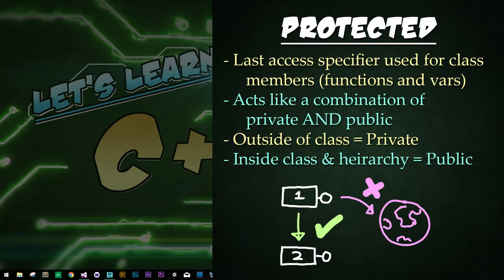Protected is the last of the access specifiers. In one of the previous tutorials, we learned about public and private, and now we will cover the last: protected. Protected class members act as private to anything outside of the class hierarchy. However, inside the class hierarchy, those same members act as public. In other words, protected is a keyword that acts as private outside the class and acts as public within the class hierarchy and the inheriting classes. That's it — it's just that simple.